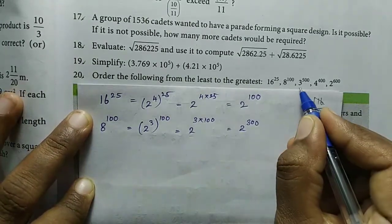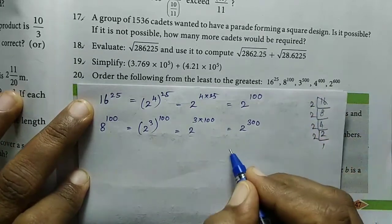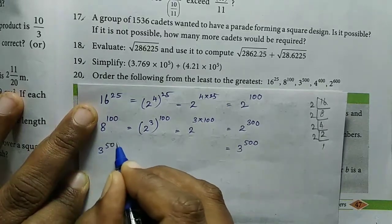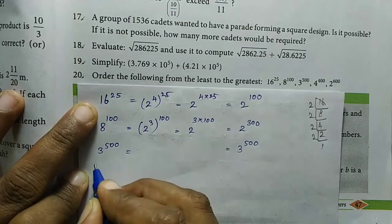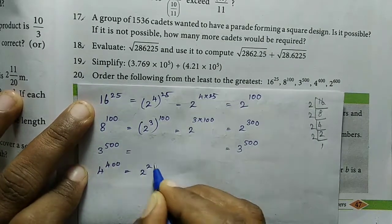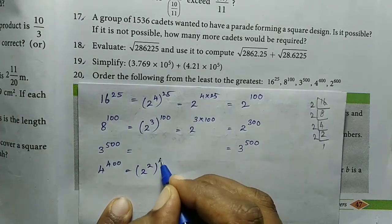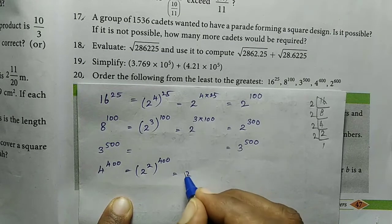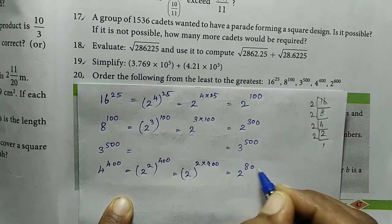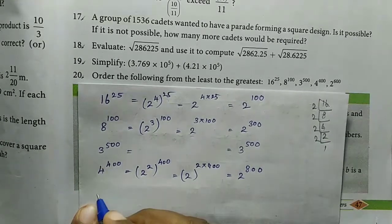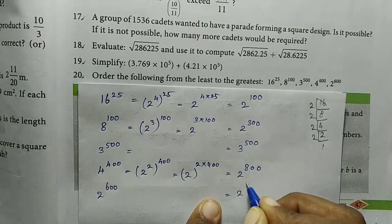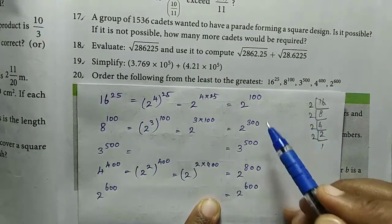So 2 power 300. Next, 3 power 500 stays with base 3. For 4 power 400, base 4 is 2 squared, so 4 power 400 equals 2 power 2, the whole power 400, which equals 2 power 800. The next value, 2 power 600, already has base 2.